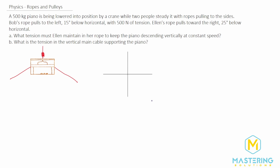Welcome to Mastering Solutions. In this ropes and pulleys problem we have a 500 kilogram piano. We're lowering it down by these ropes. Ellen's rope has an angle of 25 degrees below the horizontal, and Bob's rope is 15 degrees below the horizontal. We'll say Bob's rope is theta 1 at 15 degrees, and Ellen's rope is theta 2 at 25 degrees.